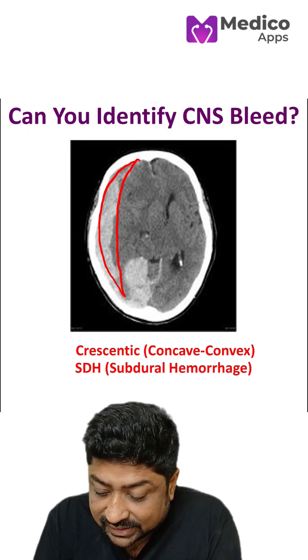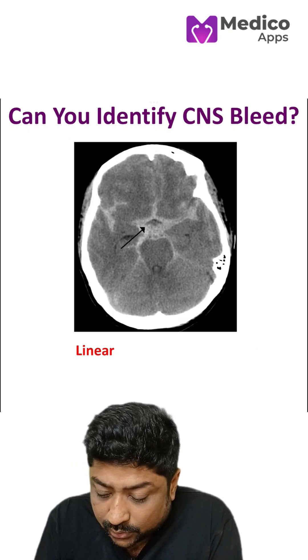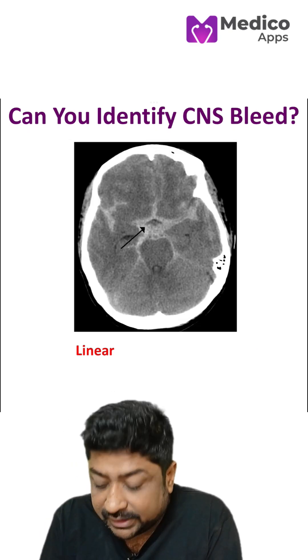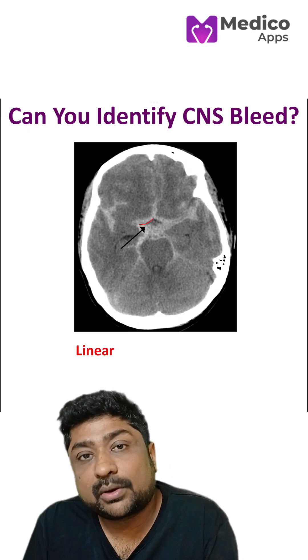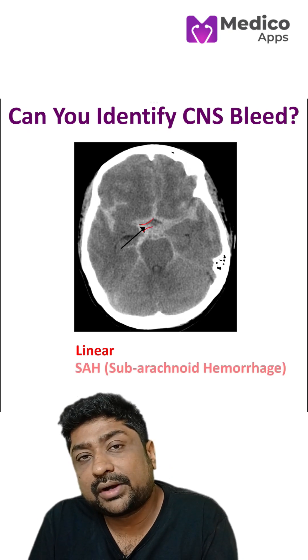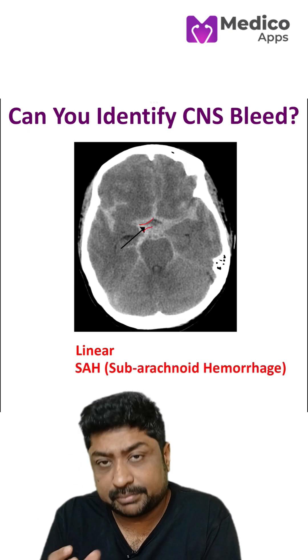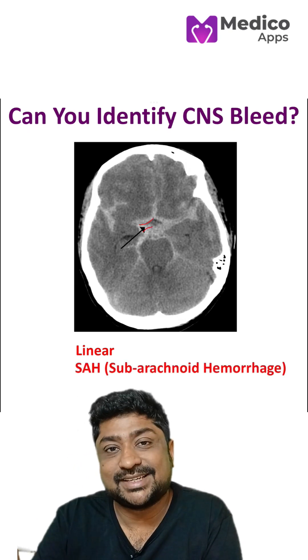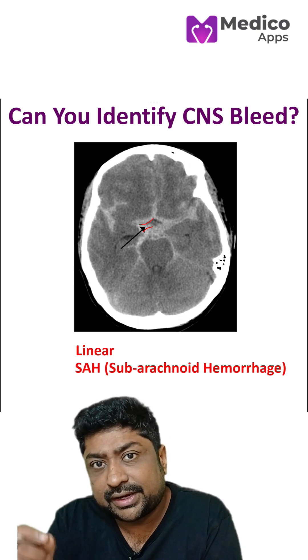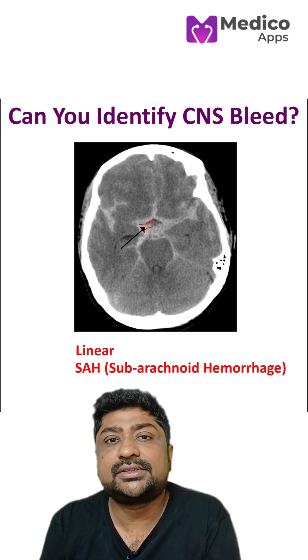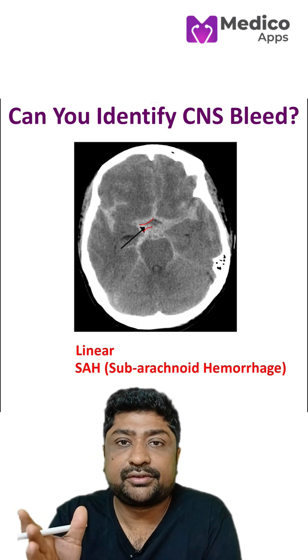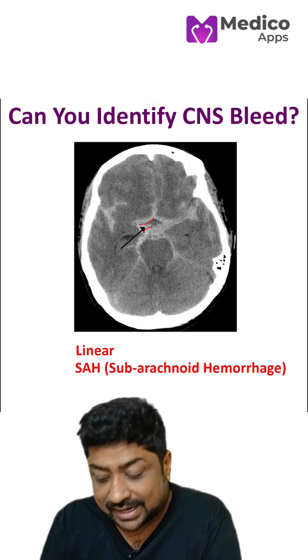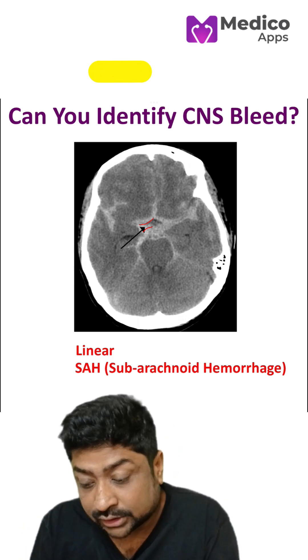The last one is linear, and this bleed is seen in subarachnoid hemorrhage. What happens here is the bleed occurs around the blood vessels. So as the blood vessels are there, that's where we will have the bleed, and that is why it appears linear.